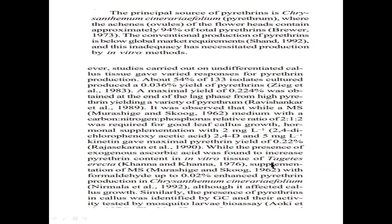Tagetes erecta is another plant studied for pyrethrin production, and inclusion of vitamin C (ascorbic acid) in the medium resulted in increased yield when supplemented to MS medium. It depends on each plant chosen — you have to optimize for all macronutrients, all micronutrients, and all environmental conditions to arrive at a decision which gives the best yield.